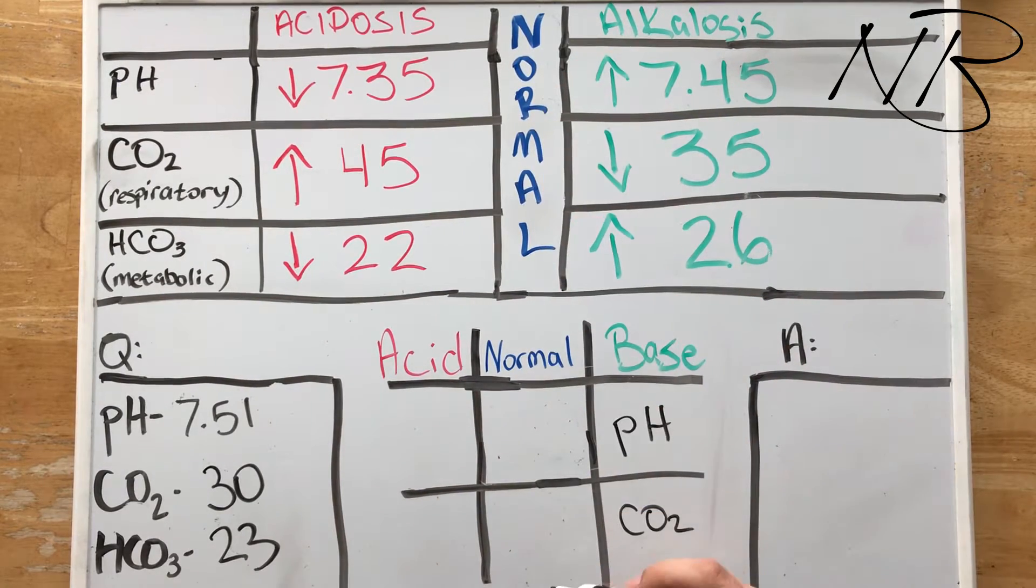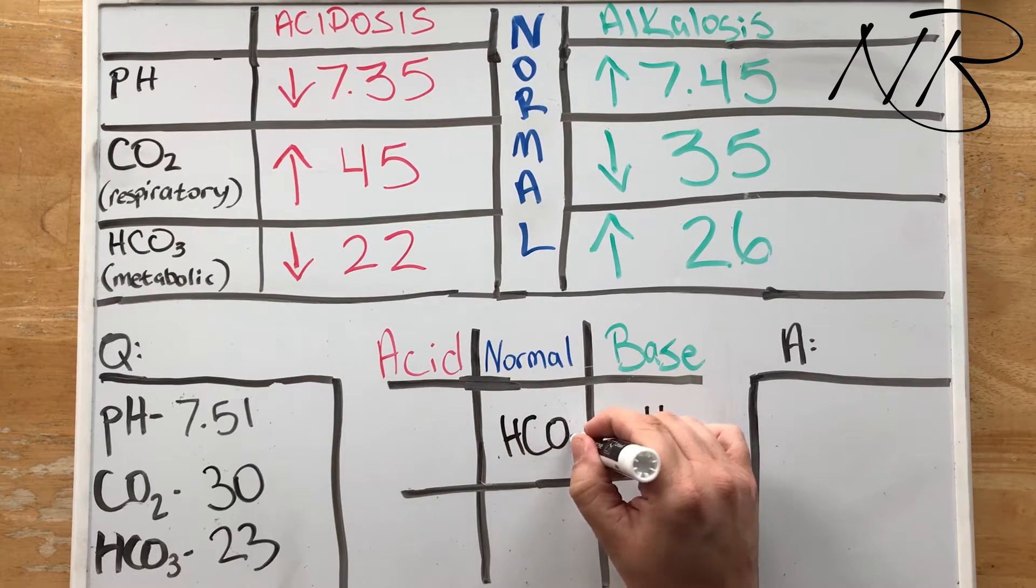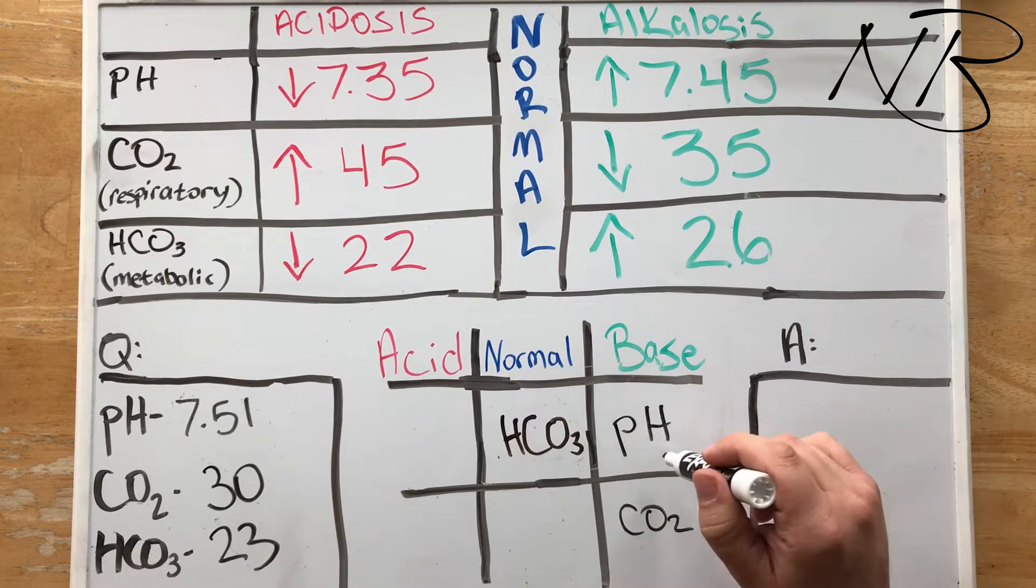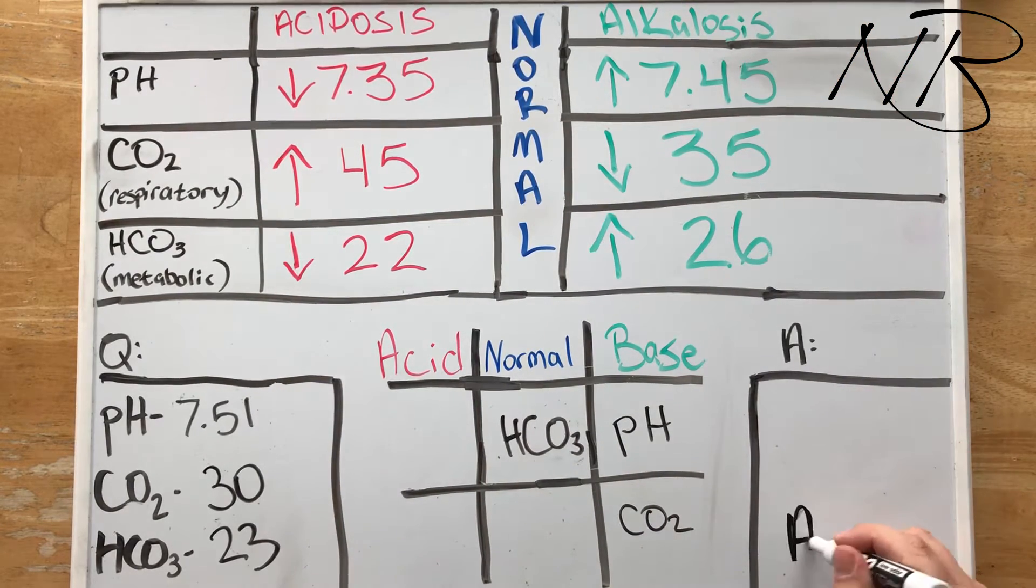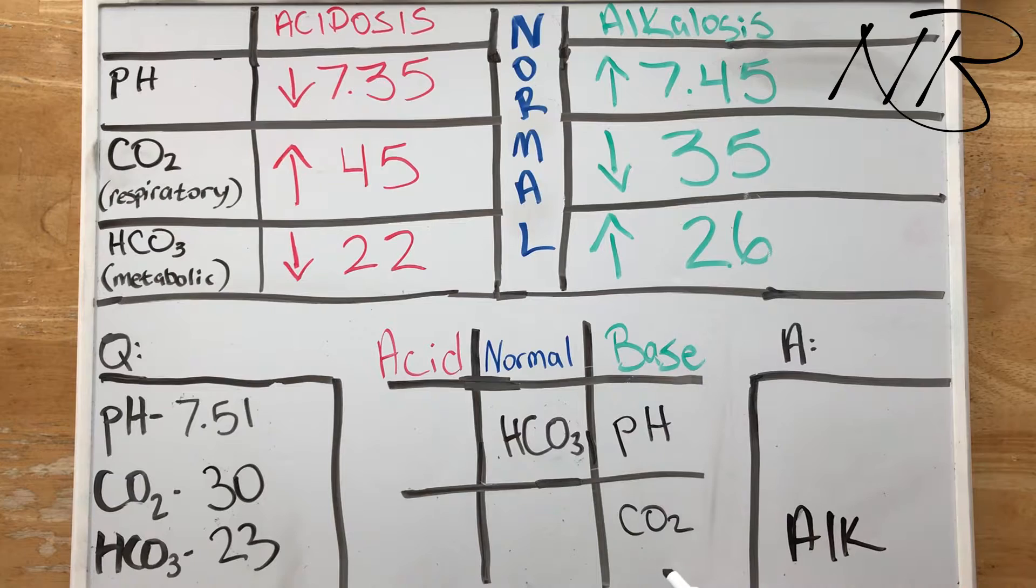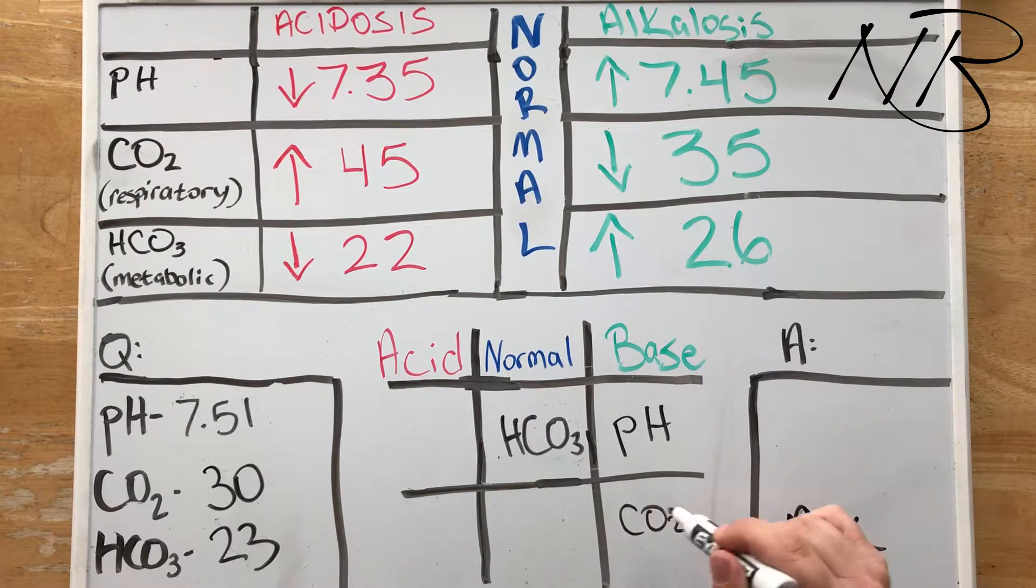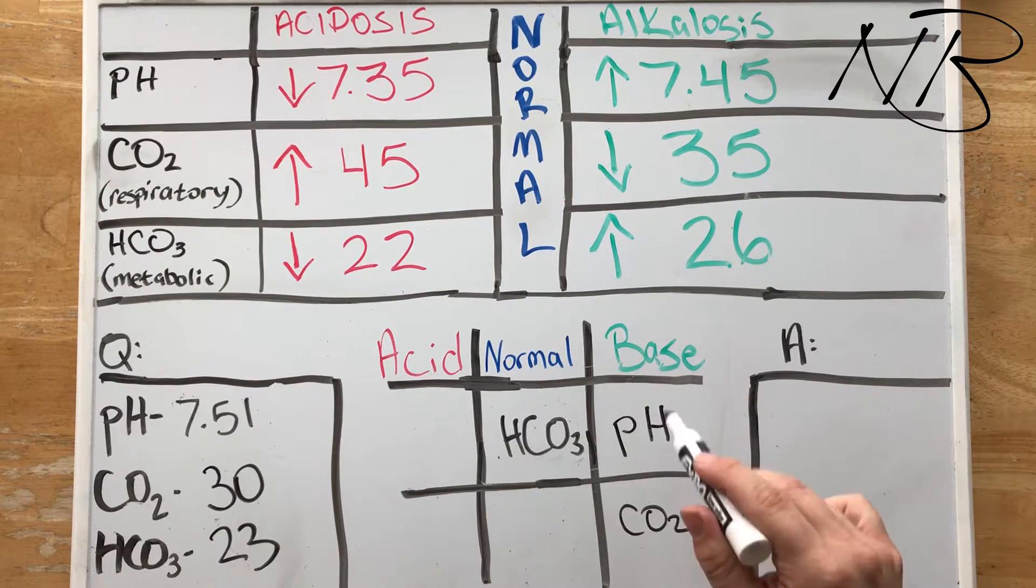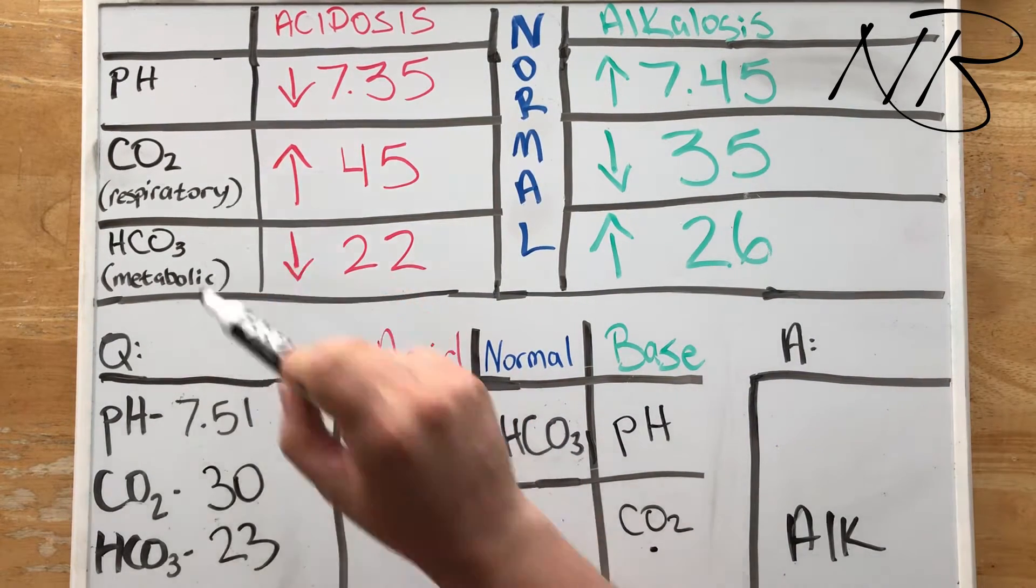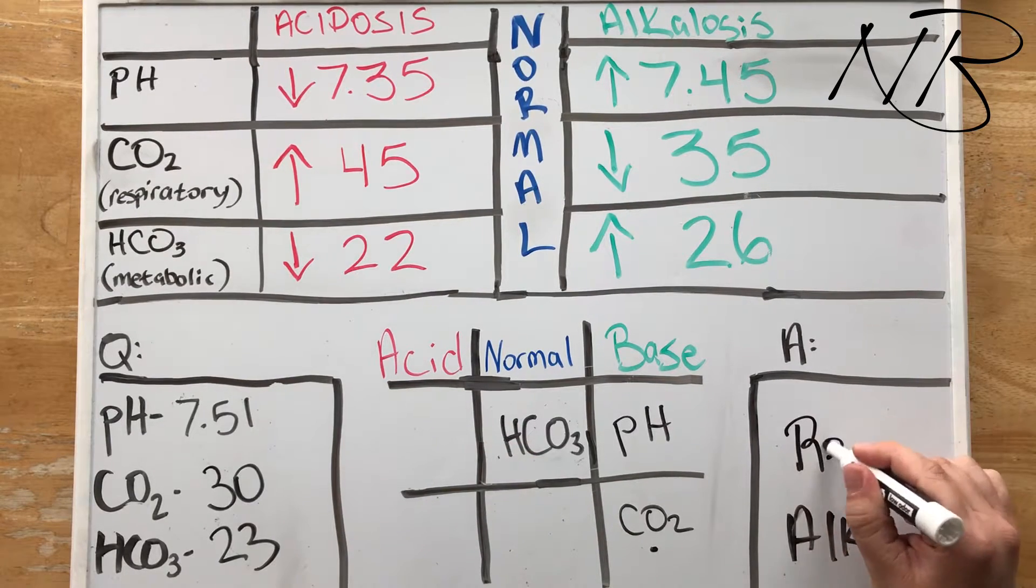And again as we can see we know right off the bat based on our pH that we're in a state of alkalosis, and it's going to be determined upon that value that falls in the same column as your pH. In this case it's our CO2 that is the concern, therefore it is respiratory alkalosis.